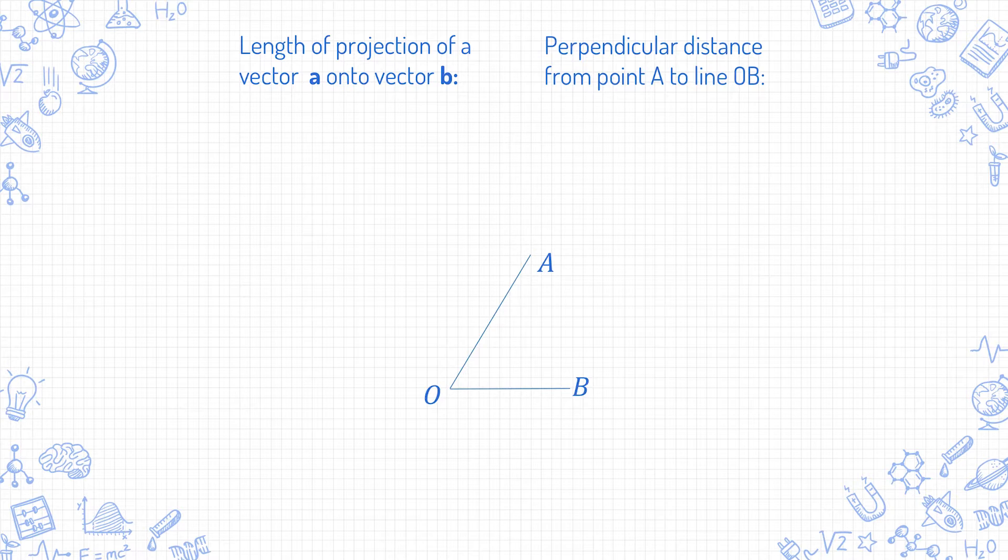Suppose I have the points O, A and B, where OA is the vector a and OB is the vector b. This angle theta is the angle between the vectors a and b. And if OA is a vector, then the length of the line OA is mod OA or mod a. Now suppose I drop a perpendicular from A to OB. Let's call this point F.